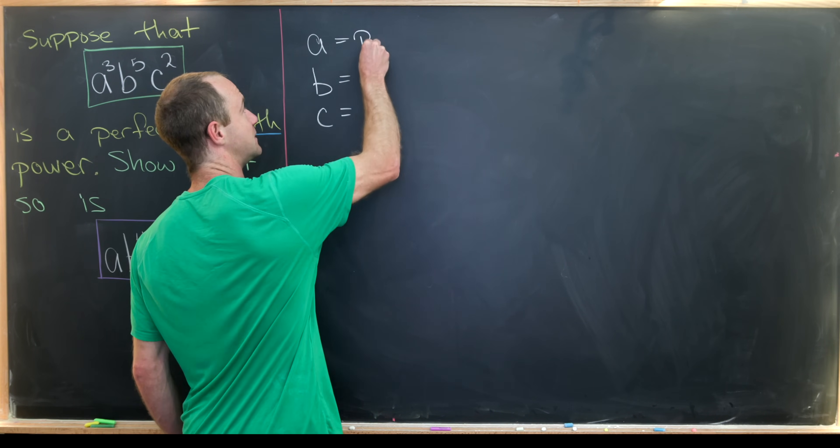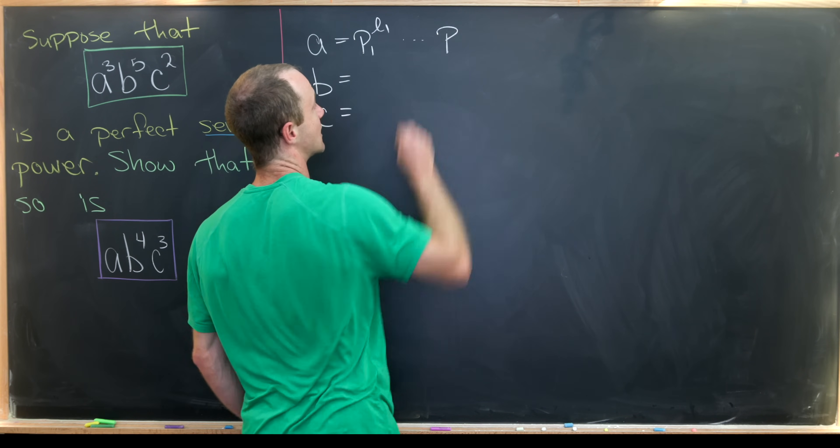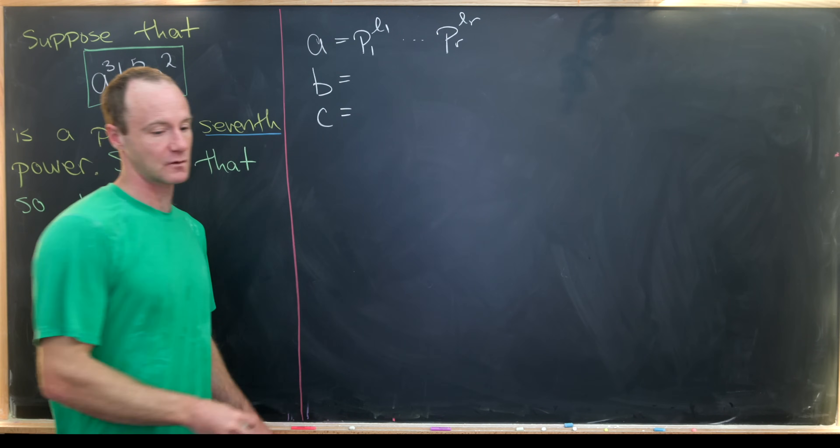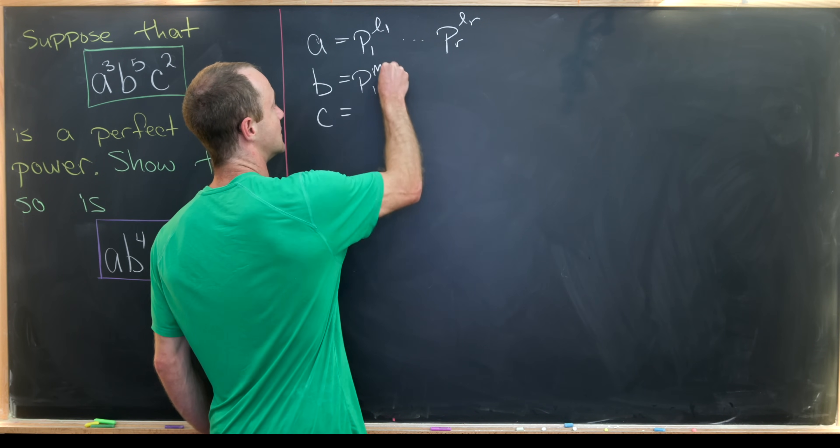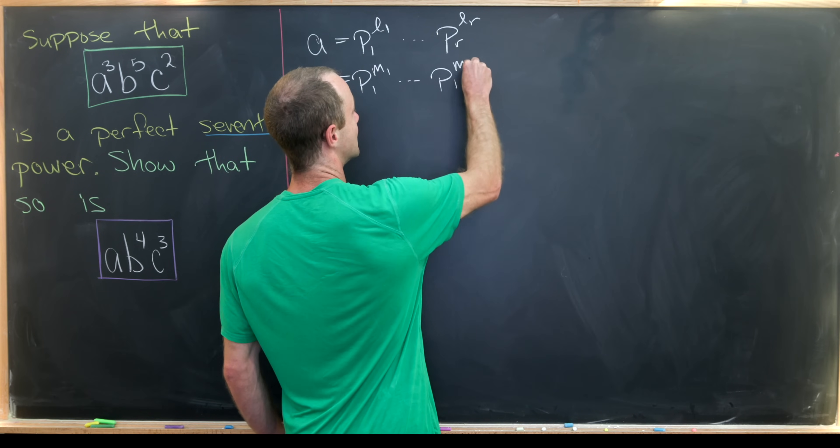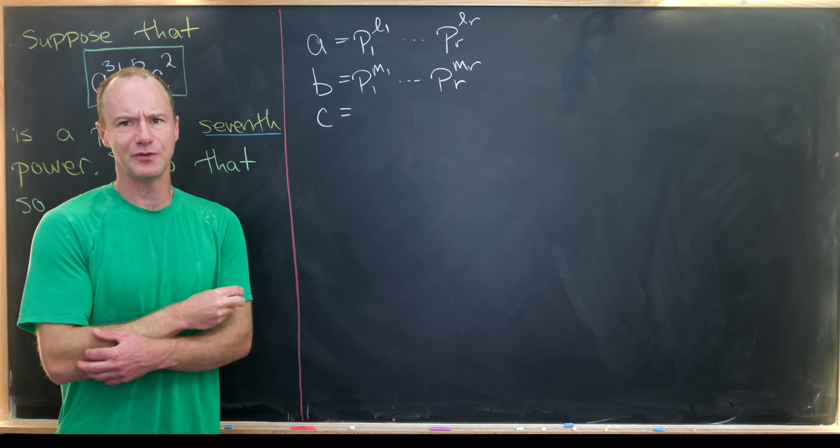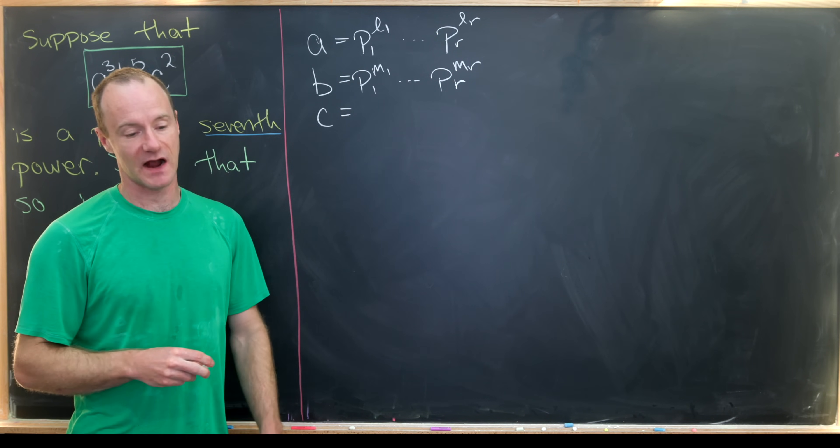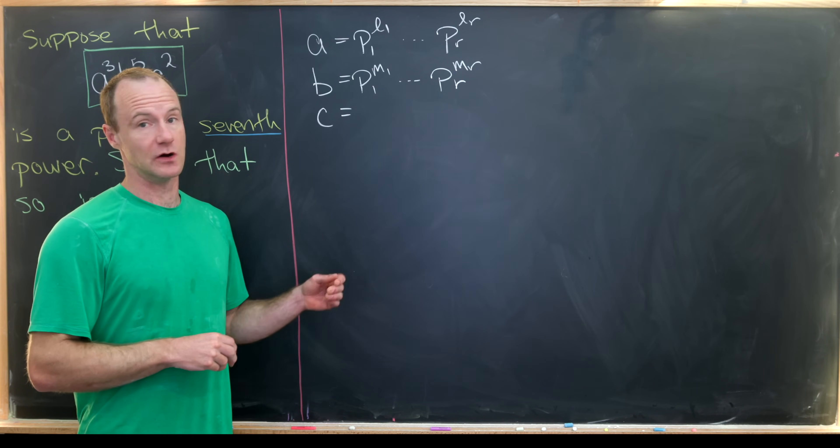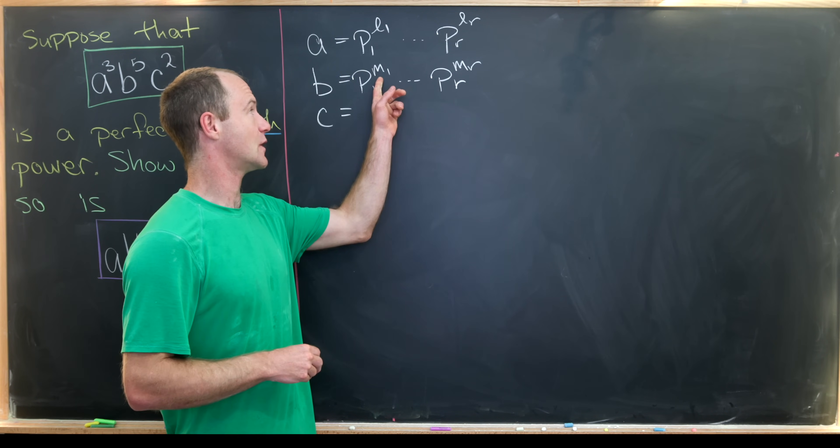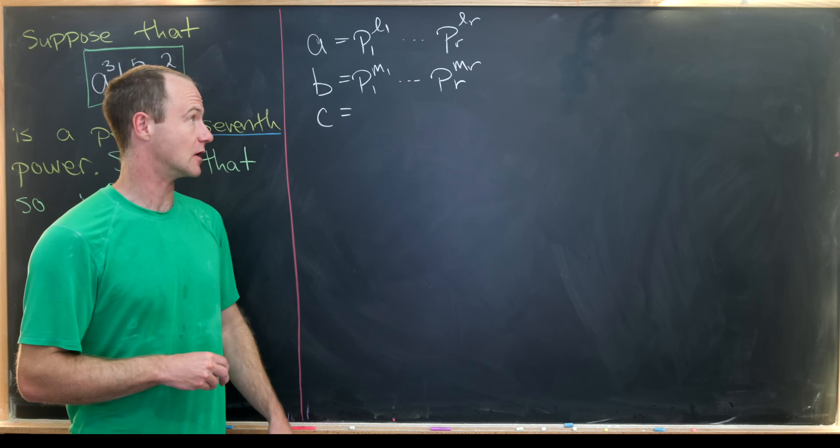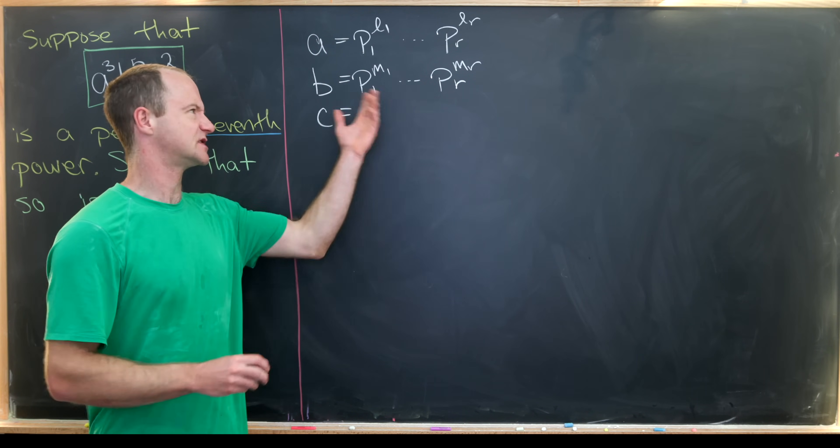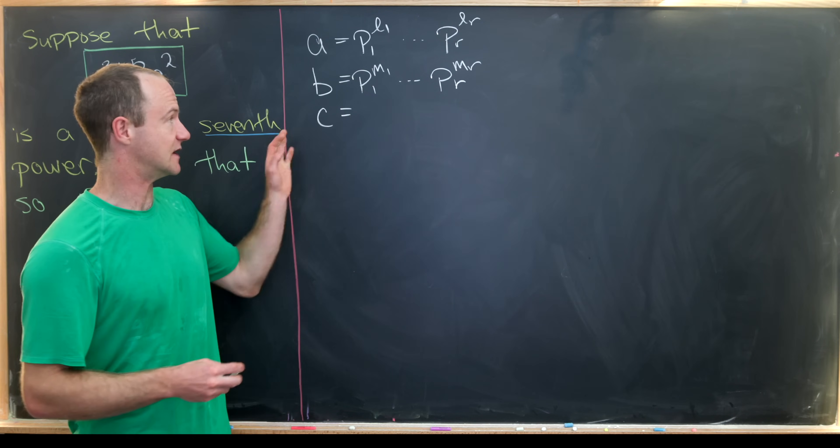So we'll write a as p1 to the l1 multiplied all the way up to p sub r to the l sub r. And then we're going to write b as p1 to the m1 all the way up to pr to the mr. And you might say, well, how do we know that a and b have the same prime factors? Well, we don't know. And in fact, what we'll do is just take whatever exponent we need to to be equal to zero so that we're using all of the prime factors of a, b, and c, but then just giving them a zero exponent as necessary in the expansion of a, b, and c.